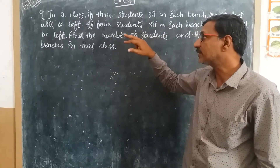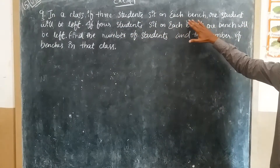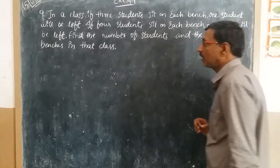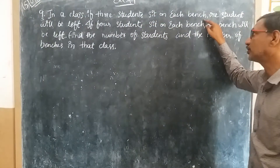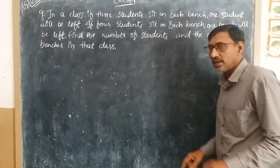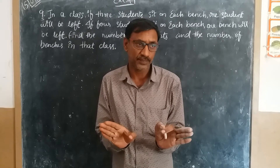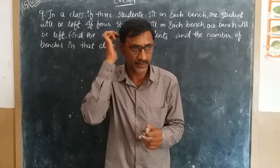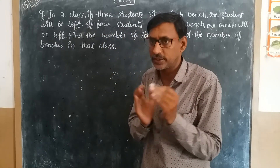See here: in a class, if 3 students sit in each bench, 1 student will be left. We don't know how many students are there in our class. So, let me take the number of students as x.